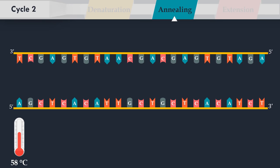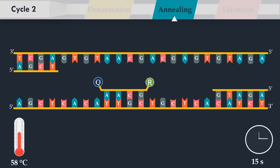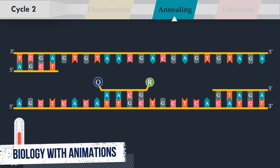In the next step, the reaction temperature is lowered, allowing annealing of the primers to each of the single-stranded DNA templates, and annealing of the Taqman probe to its complementary part of the target DNA.